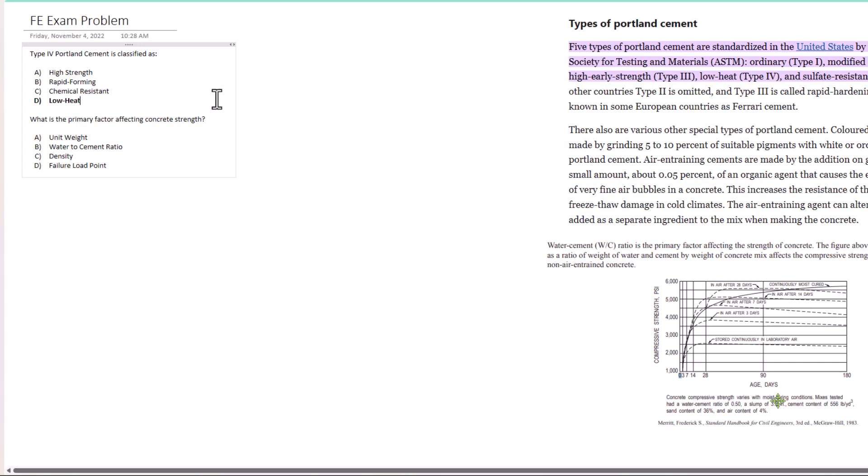Moving on to the second problem: What is the primary factor affecting concrete strength? We have four options: unit weight, water to cement ratio, density, and failure load point.